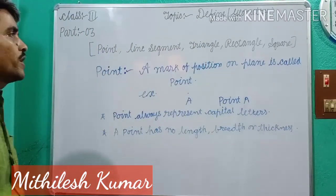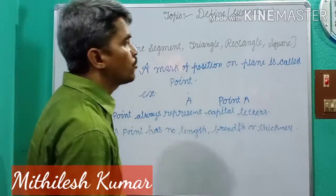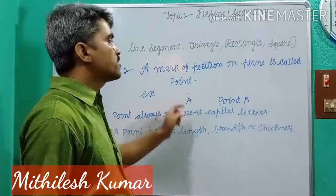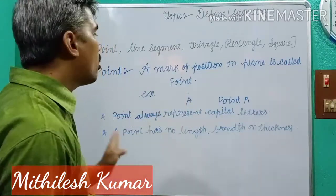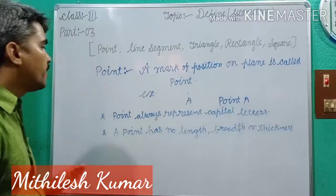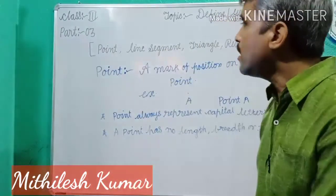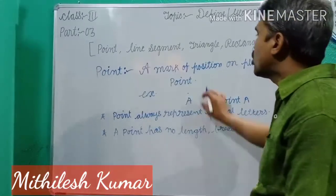So first of all, what is point? A mark of position on plane is called point. This is the example of points. And point always represented by capital letters. A point has no length, breadth or thickness. This is the short notes of points.